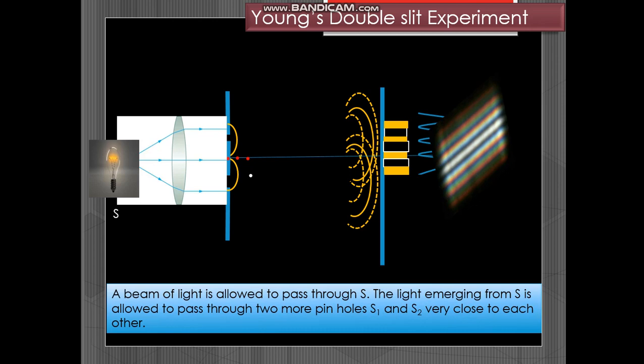These are the two sources of light that is emerging from S and produced at S1 and S2 which is very close to each other. This is the distance d and this is small d, the distance between the two sources.